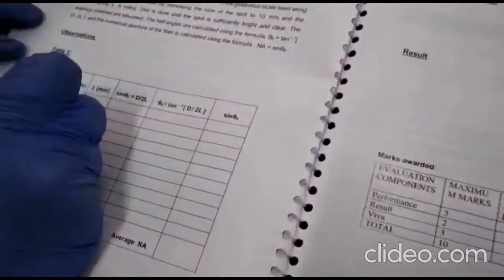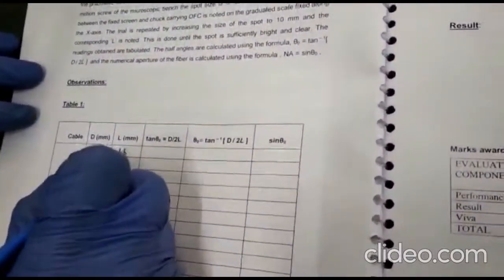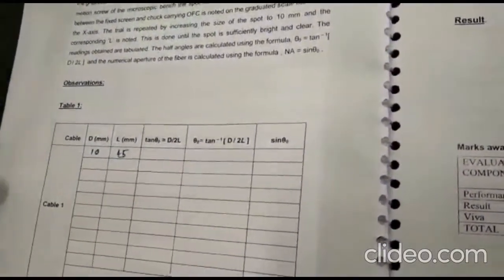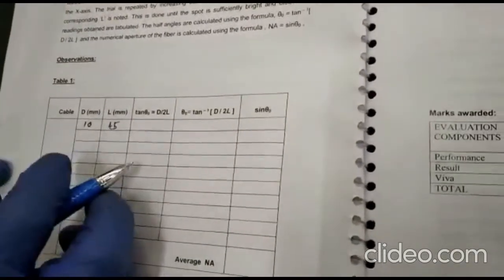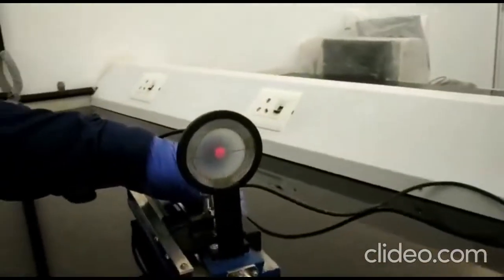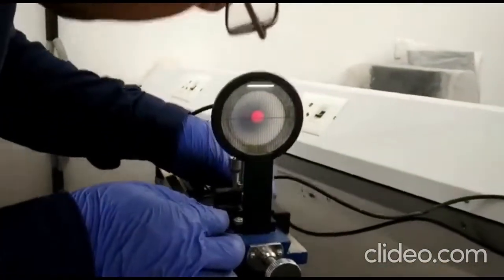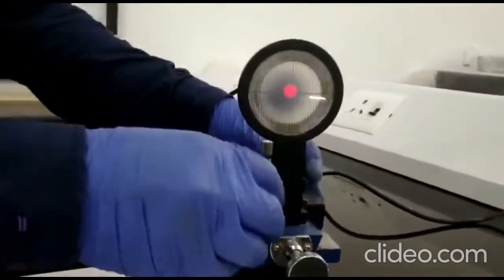So you need to write it down. So here this is 10 mm and this is 45 mm. Okay. So 10 mm and 45 mm, the diameter and the length. So you have to do this again, like you have to be very careful and move this back until you get the next reading.